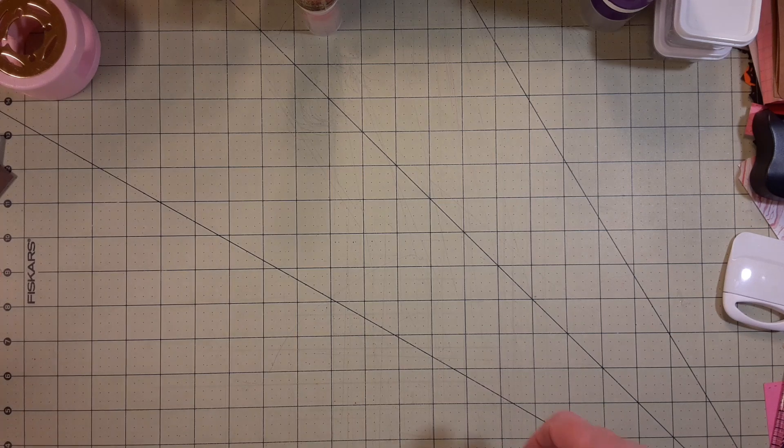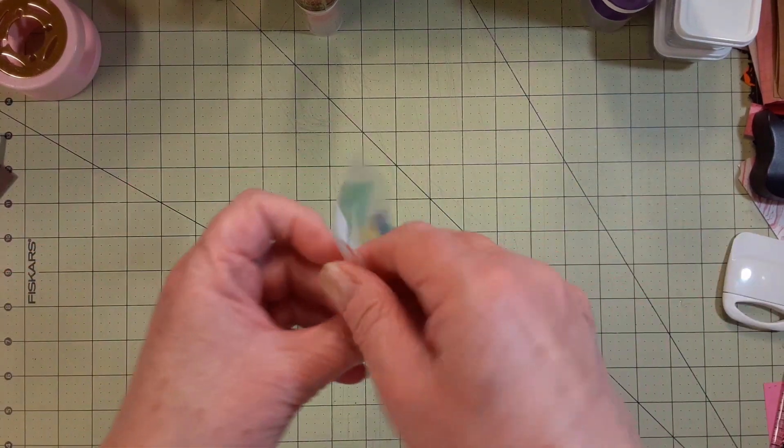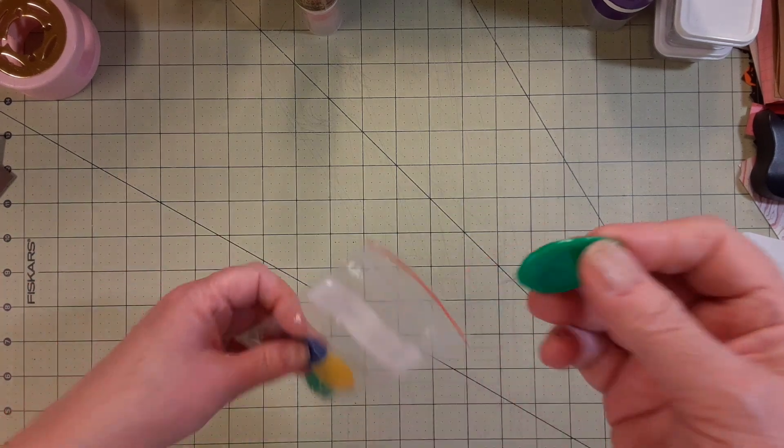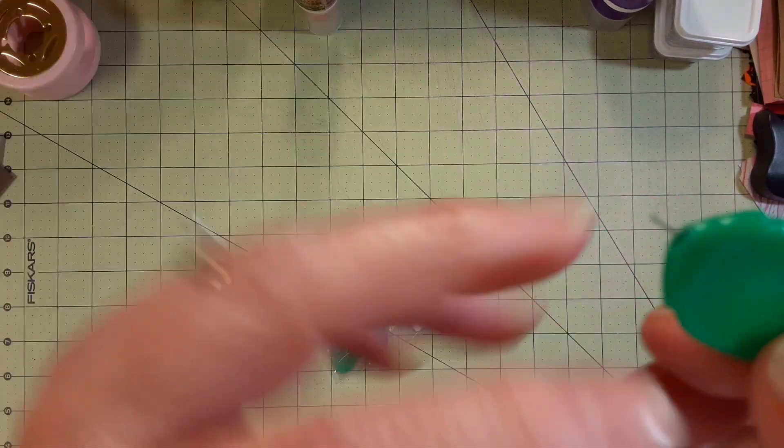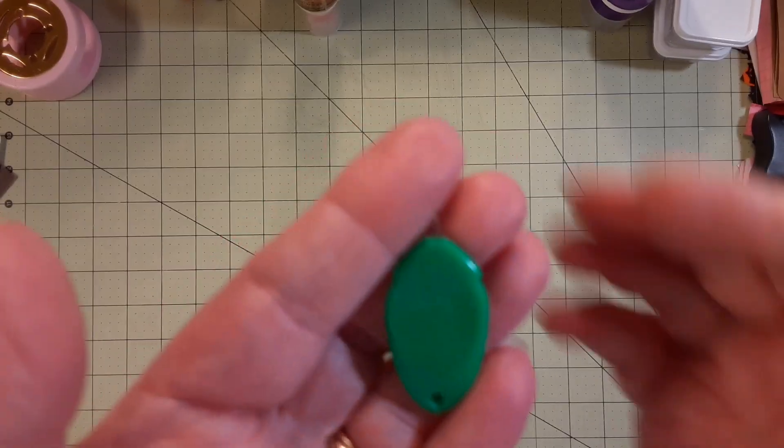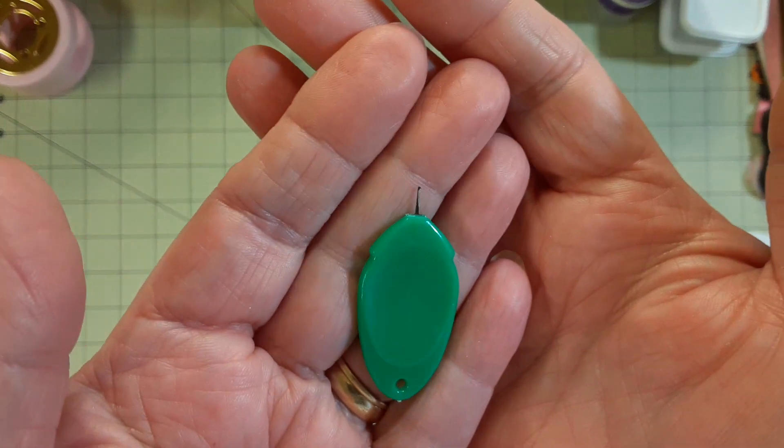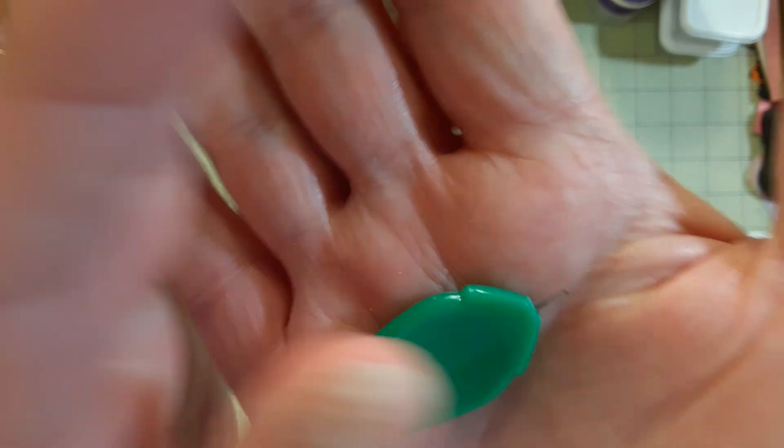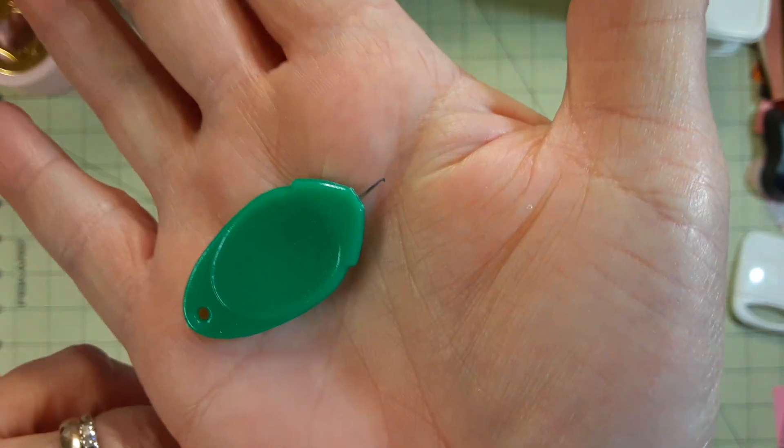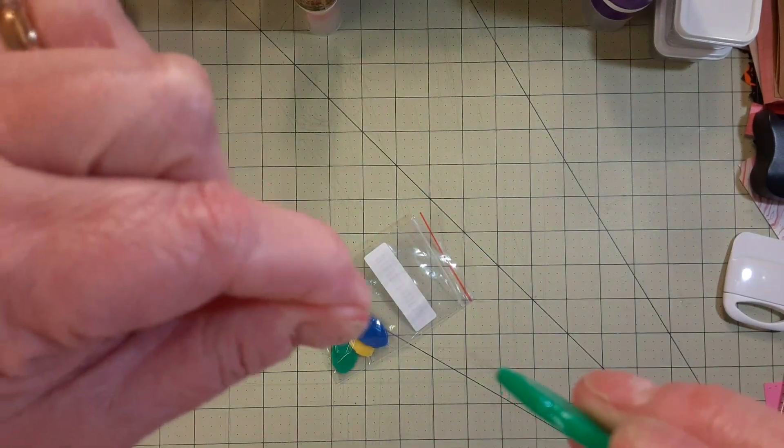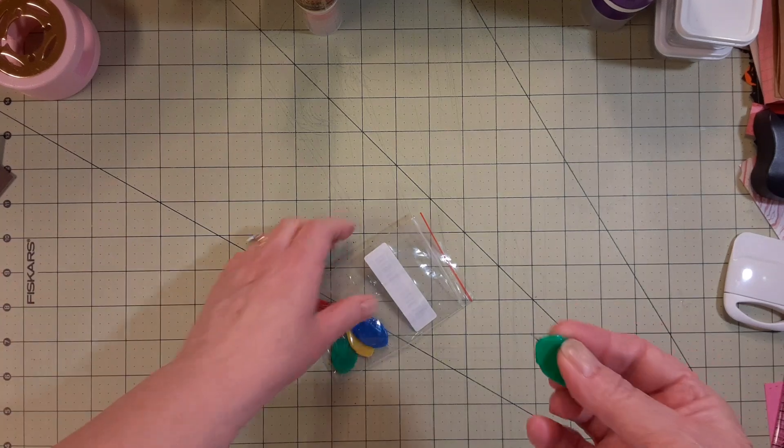I also ordered some of these. These are threaders to thread needles. I looked at this and I said, what the heck is that? That is going to be so hard to use. Let me see if I can get it in there. You can only get so close with this. There's a little hook on the end of that. That's what you're supposed to push through the eye of the needle, hook your thread on that and pull it back through. I'll see how that works out.